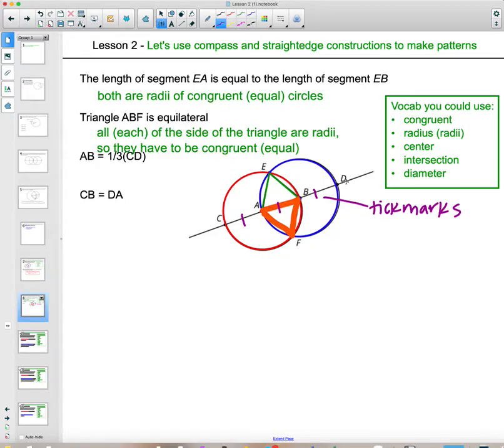Since AC, AB, and BD are all the same, AB is one out of three parts. AB is one-third of CD because it is one out of three parts, and each of those parts are equal.